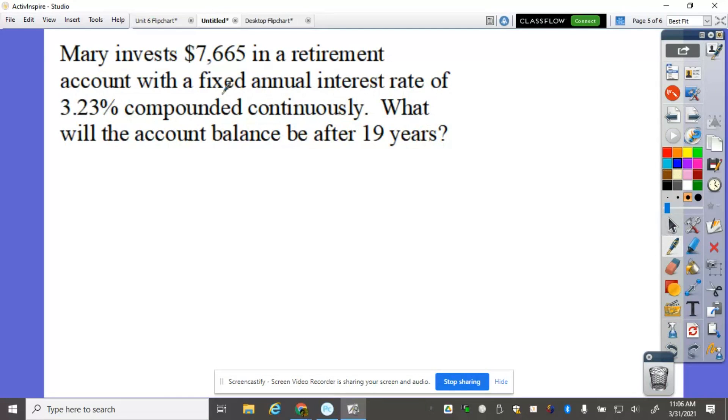So let's try this one now. Mary invests $7,665 in a retirement account with a fixed annual interest rate of 3.23% compounded continuously. What will the account balance be after 19 years? So we know that our principal is $7,665, that's the initial amount that Mary invested. With 3.23%, we know that 3.23% can be written in decimal by moving this decimal place 2 to the left, 1, 2, that makes it 0.0323.